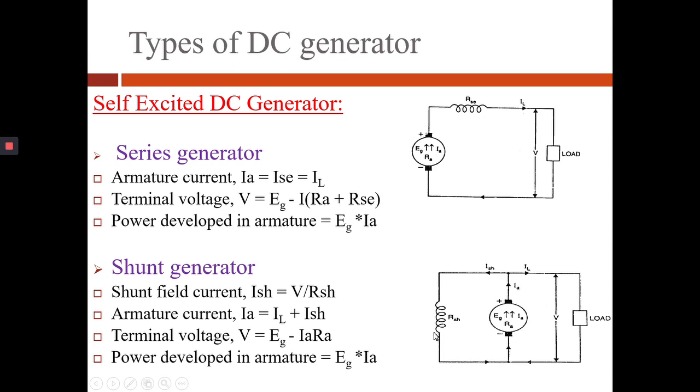In case of series generator, armature current IA equals ISE equals IL and terminal voltage V equals EG minus I into RA plus RSE and the power developed in armature equals EG into IA.